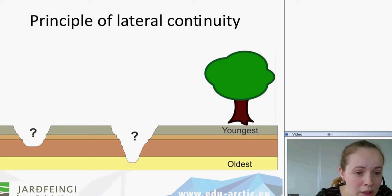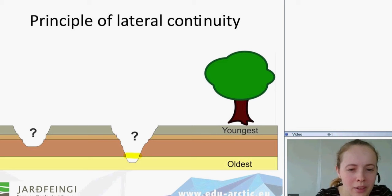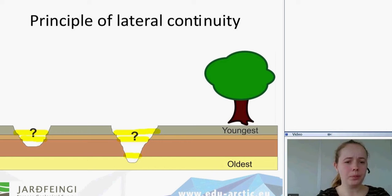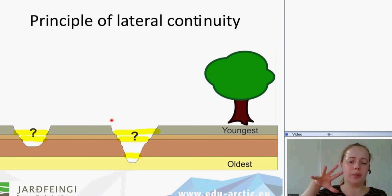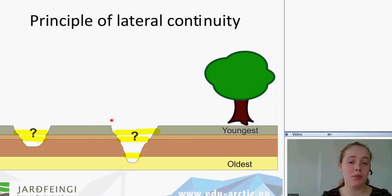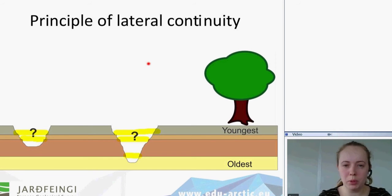At one point, before the process of erosion started, there used to be rocks there too — the layers used to extend across. In the meantime, erosion happened. Many things can cause erosion: water running by, ice moving through and carrying stones and sediments, or wind flowing constantly over time. That is the assumption of the principle of lateral continuity.